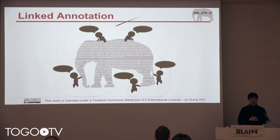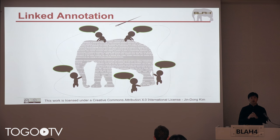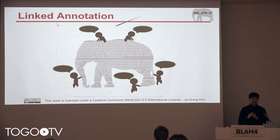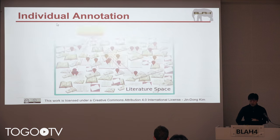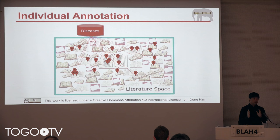So if we collect many, many individual annotations and if we can link them together, then we will have a much, much better chance to figure out the big picture of the giant elephant. It is obvious that we'd better have individual annotations connected to each other.